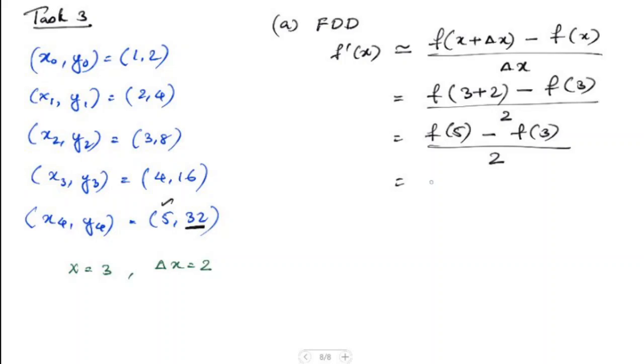So we'll take the value 32 for this minus f(3). When x equals 3, f(3) is 8. So we have 32 minus 8 over 2, and that is 12.